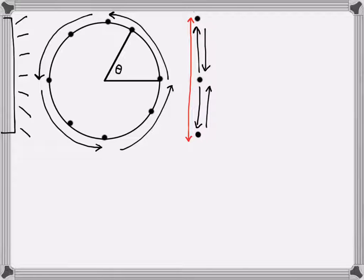We can essentially say that when we think about a mass oscillating on a spring with simple harmonic motion, we can treat it as a type of circular motion in that it will have a phase angle. Even though there's no visible angle as the mass moves back and forth, it's still moving through a phase angle if we consider it as circular motion.